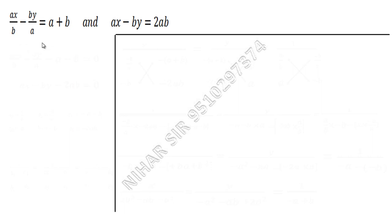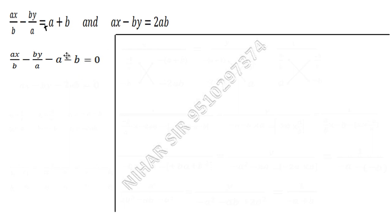First, I will convert these two equations into standard form. I will copy this as ax/b minus by/a, and take both a and b values to the left side: minus a minus b equals zero. Same with the second equation: ax minus by minus 2ab equals zero.